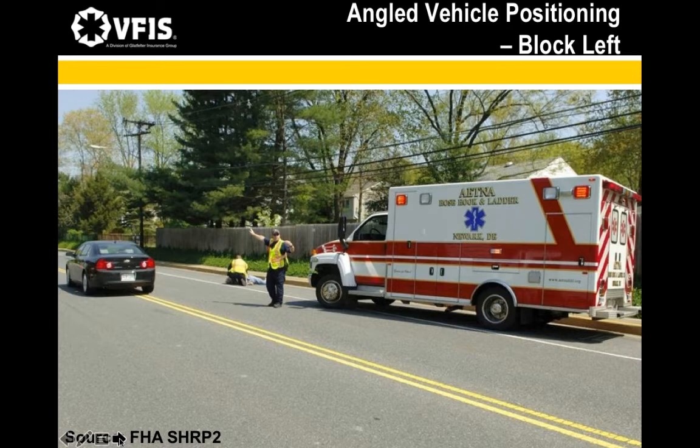Depending on the circumstances, emergency vehicles may be parked in a block left, anchored left towards the median or center line, or a block right, anchored right towards the outside shoulder. One factor when deciding between left or right block is whether it will be necessary to access equipment from the vehicles or, in the case of a fire apparatus, the pump panel. In those cases, position the vehicle on the opposite side of ongoing traffic. An ambulance should be positioned with its loading zone away from moving traffic.